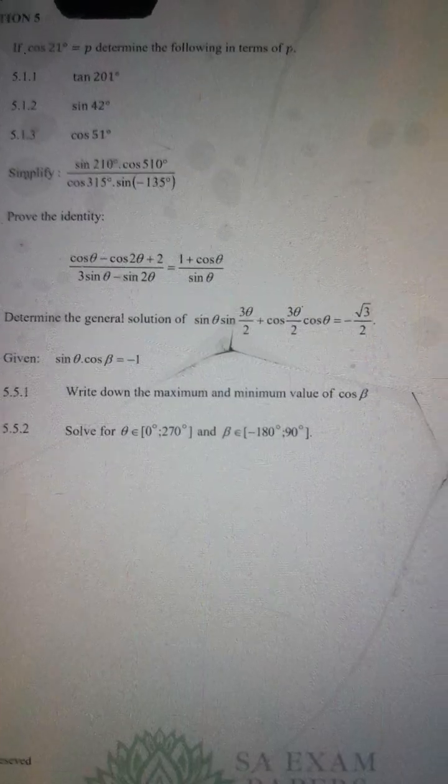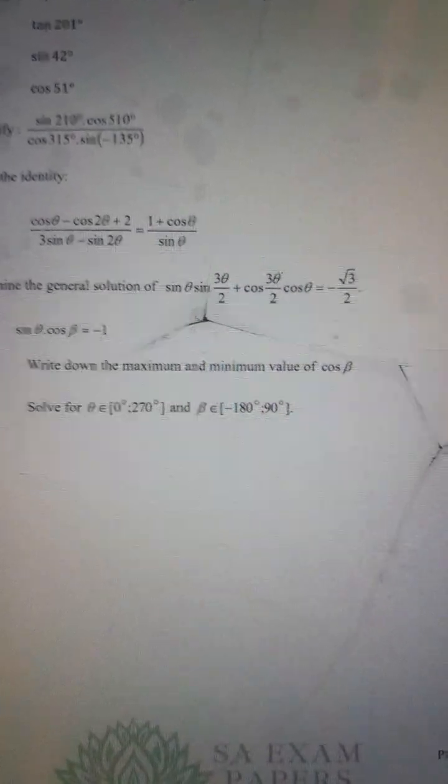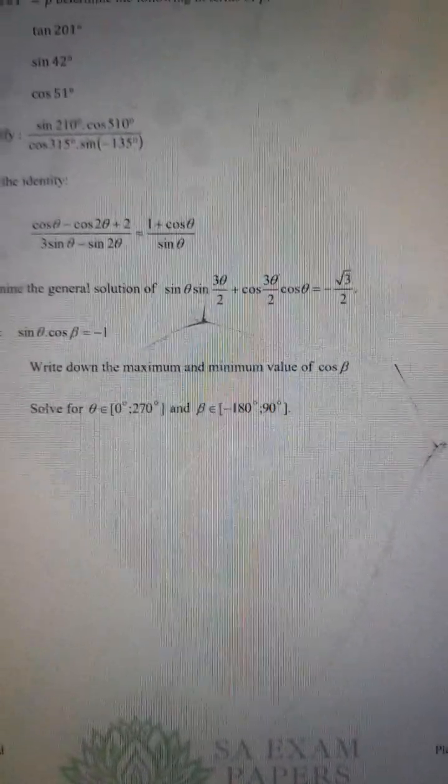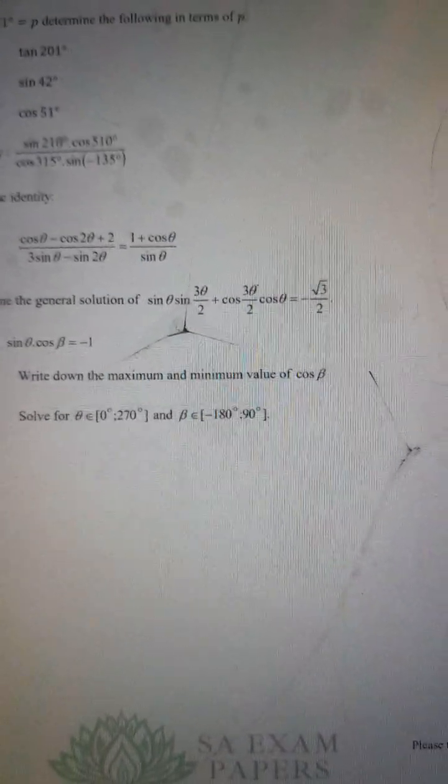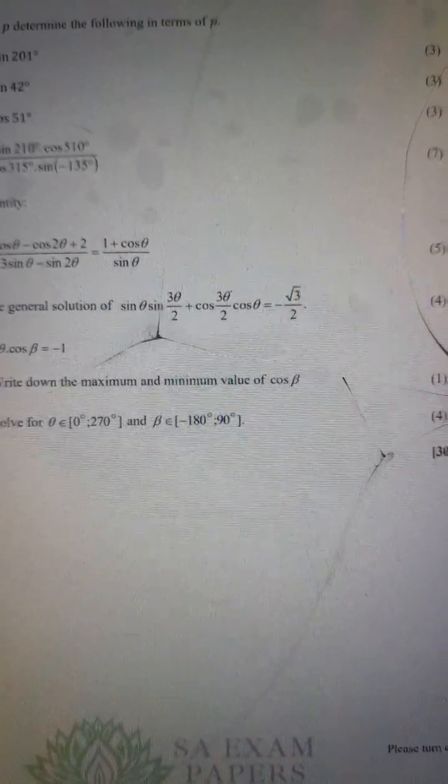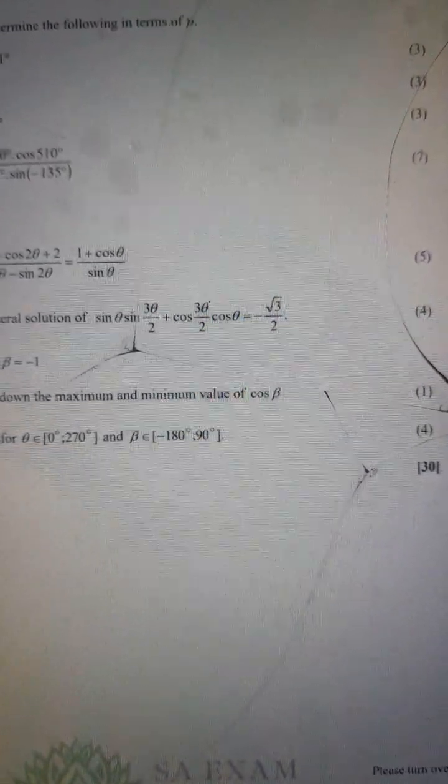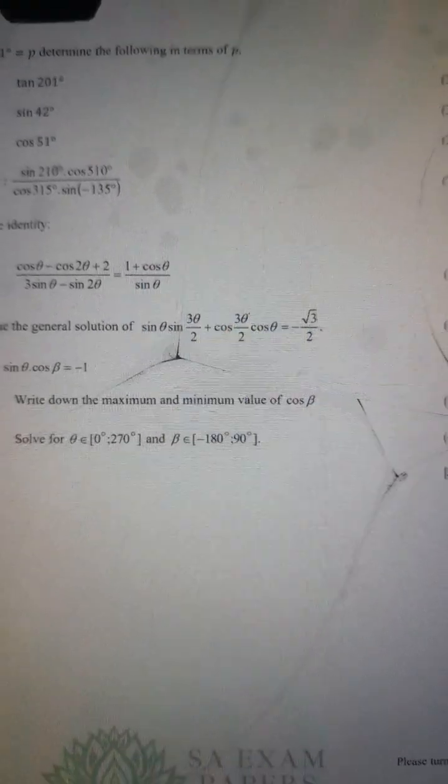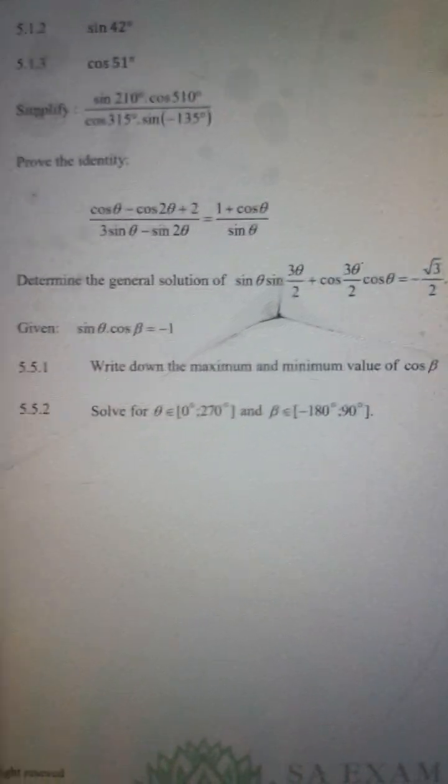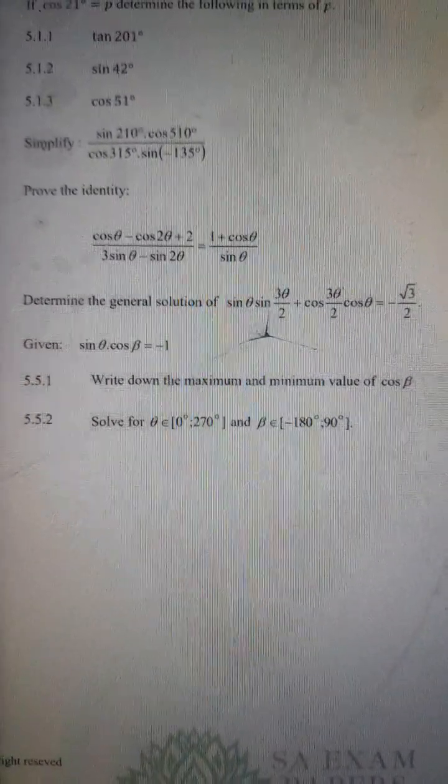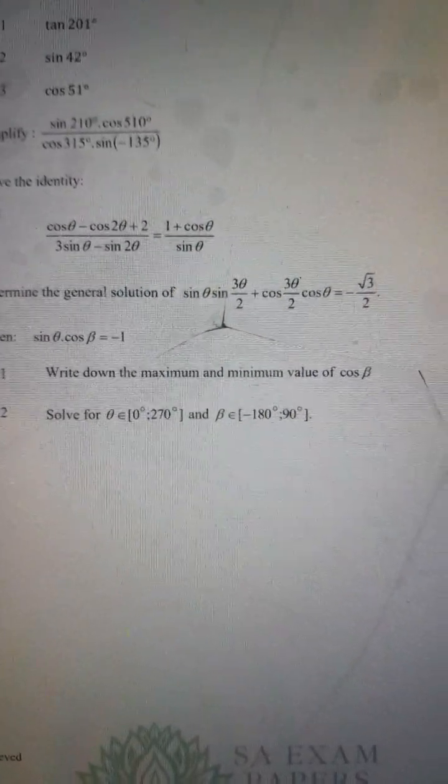At 5.5, we're given sin theta times cos beta equals negative 1. They said write down the maximum and minimum value of cos beta. If we look at the graph of cos beta, when you draw it, the maximum value will be 1 and the minimum value will be negative 1. That's the solution at 5.5.1.